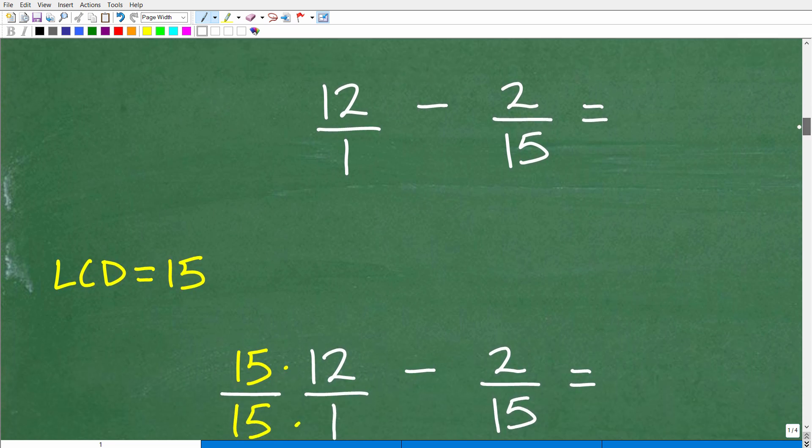Okay, so remember, anytime you're adding or subtracting fractions, the denominators have to be the same. So in this case, this denominator is 15 and this is 1. So we're going to have to fix this up. And we're going to have to figure out what the lowest common denominator is. So the lowest common denominator in this particular problem is 15. That's the lowest common denominator that both 15 and 1 have in common. Hopefully you knew that.